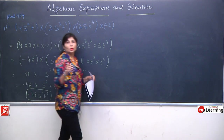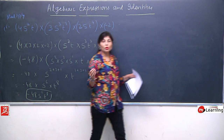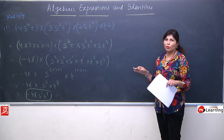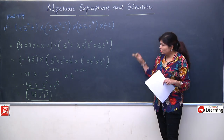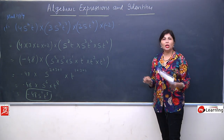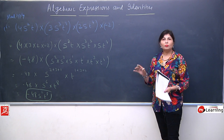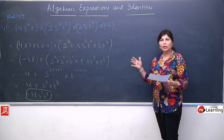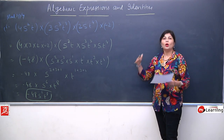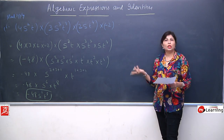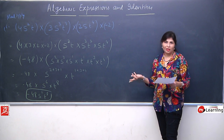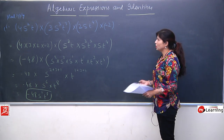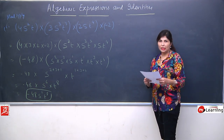No matter how many terms are given, how large the question is, how many minus signs, or what variable is used — the procedure is always the same: numbers multiply with numbers, all same variables are collected, and their powers are added. Multiplication of algebraic expressions is very easy.